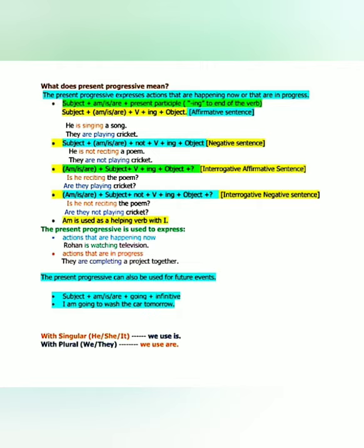Before the formulas, remember: with singular he, she, it we use 'is'; with plural we and they we use 'are'; with I we use 'am'; and with you we also use 'are.' The formula for affirmative sentences is: Subject + am/is/are + present participle (that is V1 + ING) + object. With 'he' as singular I use 'is', then the verb plus ING. So 'He is singing a song.'